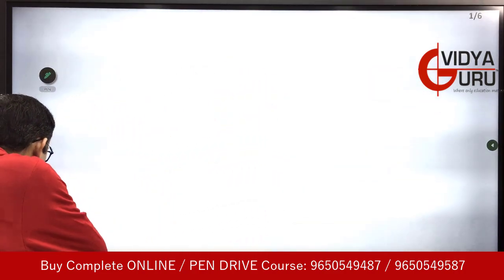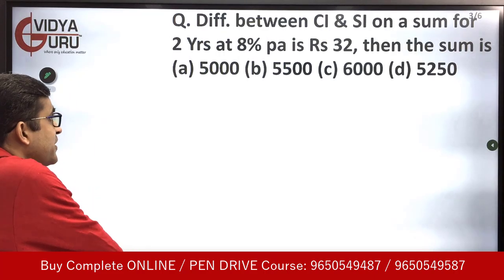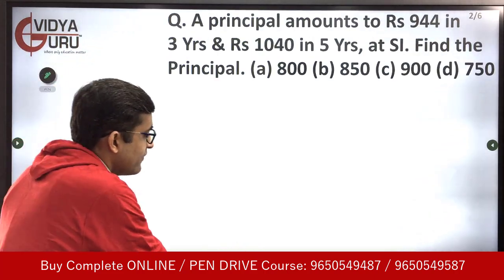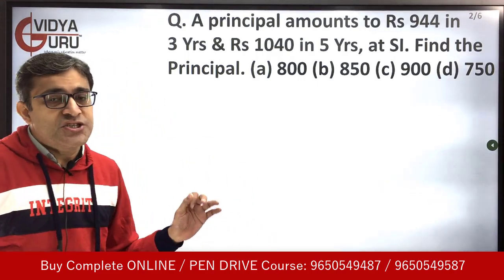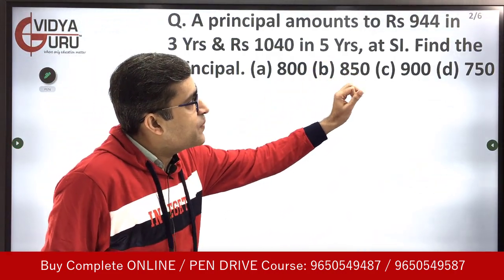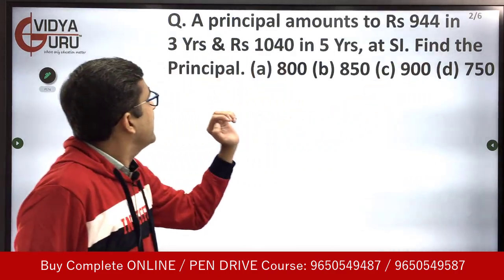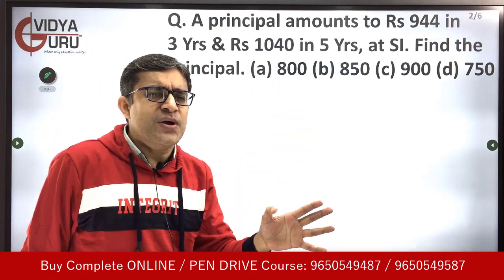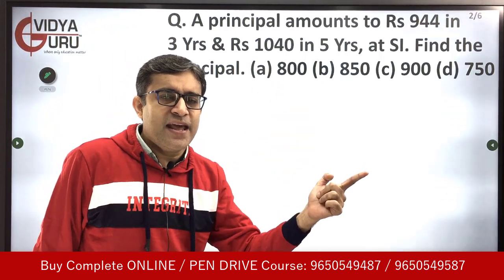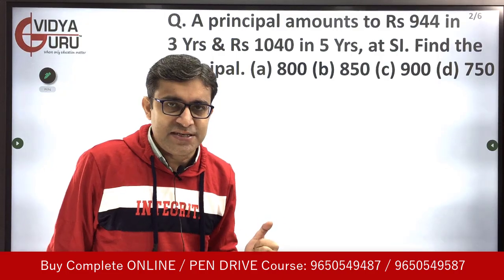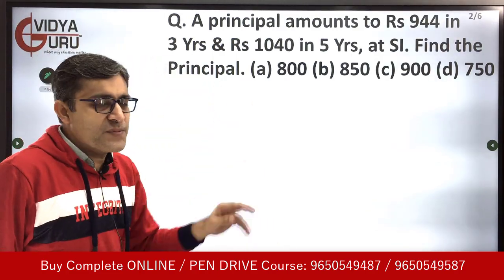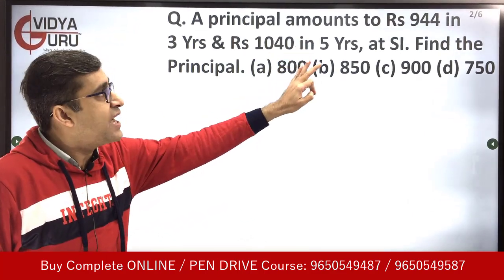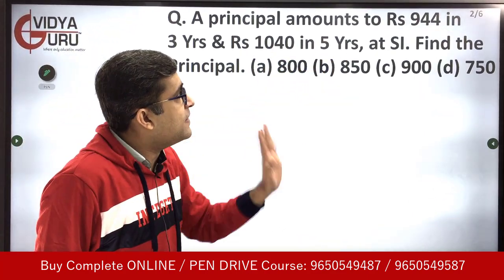Let's look at the first question, which is going to be on the easier side. A principal amounts to rupees 944 in three years and 1040 in five years. The first question is on simple interest — from the next one we will talk about compound interest. We have to find the principal. We have been given that this principal has been invested at simple interest.